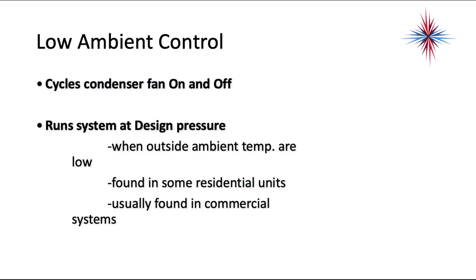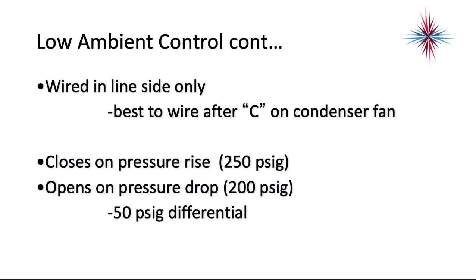Low ambient controls are another type of pressure control. What it does is cycle the condenser fan on and off to run the system at design pressures when the outside ambient temperatures are low. It's found in some residential units and usually in commercial systems. The reason we want to cycle the condenser fan on and off is to maintain a condensing pressure — we need to maintain the pressures in the system at or near design pressures. The low ambient controls are wired on the line side only, and it's best to wire after C on the condenser fan on the common side. It closes on pressure rise, usually around 250 PSIG for R22, and opens on pressure drop at 200 PSIG — a 50 PSIG differential.